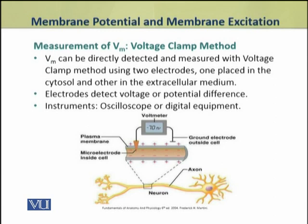We can measure and detect the membrane potential directly by the voltage clamp method. This method uses two electrodes to detect the voltage or potential difference across the membrane.